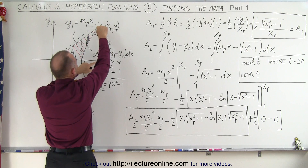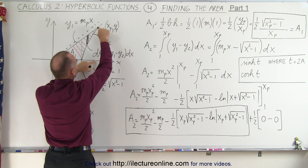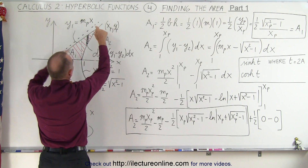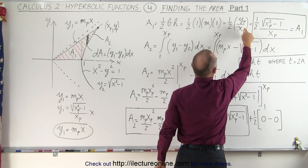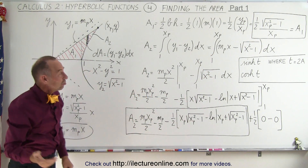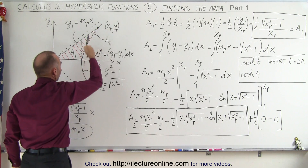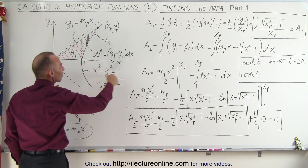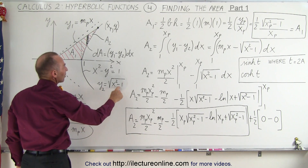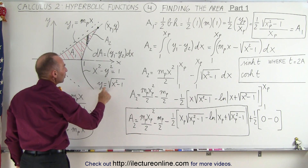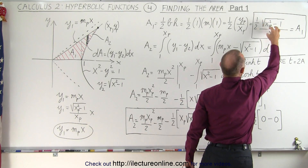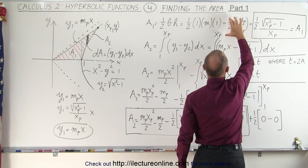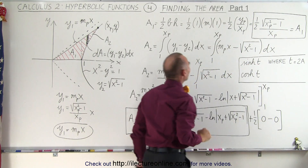The slope of this line is defined by the rise over the run — the rise is y sub p and the run is x sub p. So the slope can be written as y sub p divided by x sub p. Since that point is on the hyperbola, y is equal to the square root of x squared minus 1, and therefore y sub p equals the square root of x sub p squared minus 1. That gives us the slope, and area 1 equals one half times that slope.